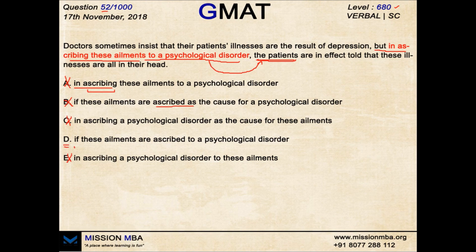Option D rectifies the modification error and also uses the correct idiom 'ascribed to.' Hope you've got this concept. Remember this idiom: 'ascribed to.' Always check for parallelism and modifier errors. Hope you are enjoying the learning. Stay tuned, subscribe to our channel if you haven't yet, let your friends know about us, and help us reach more people. Goodbye and have a good day. Mission MBA — where learning is fun and absolutely affordable.